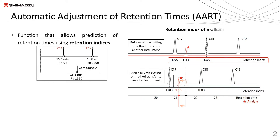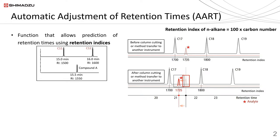The retention indices of n-alkanes are calculated by multiplying their carbon number by 100. When a column is cut during maintenance, or a method is transferred to another instrument, there may be a shift in retention times. If the shift in retention times is significant and peaks are eluting outside the quantitation window, peak identification and data processing will not be performed properly.